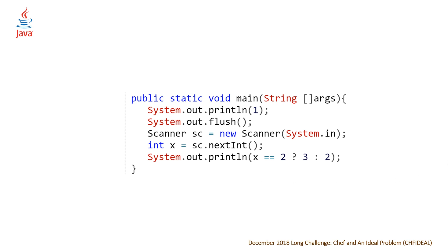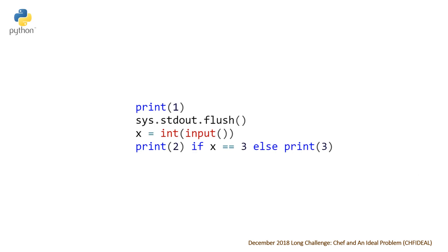Last but not least, our Python solution — the most concise of all of them. Once again, outputting one, flushing our output, reading in x, and then based on that, outputting either two or three. The time complexity for this problem is going to be constant, due to the fact that all we're doing is a simple operation based on what we read in.